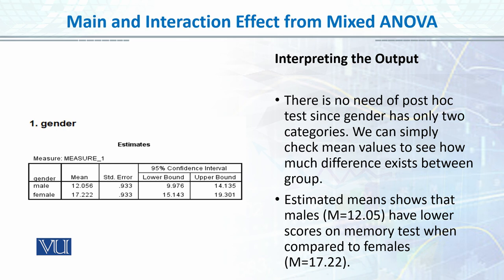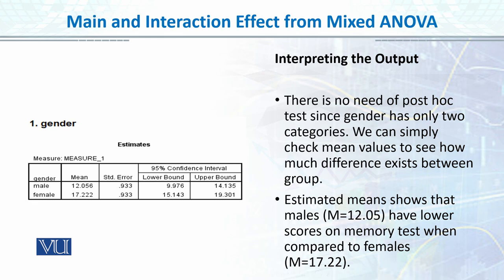Gender के estimates दिये हुए हैं — post-hoc लगाने की जरूरत नहीं क्योंकि only two levels हैं। यह बताता है कि male का mean कितना है और female का mean कितना है। यह memory task पर errors हैं — male की errors कम हैं as compared to females regardless of the level of caffeine। Main effect for gender is significant क्योंकि males are significantly making lower errors as compared to females। यह descriptive table से भी पता चलता है।